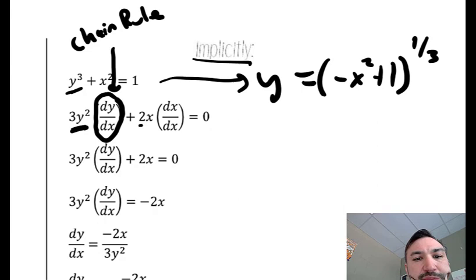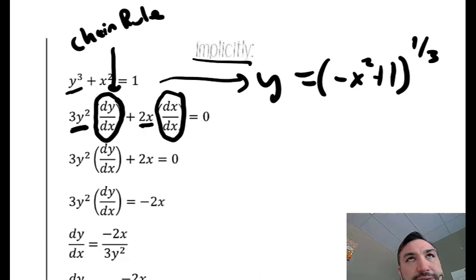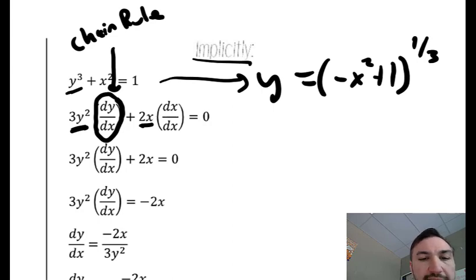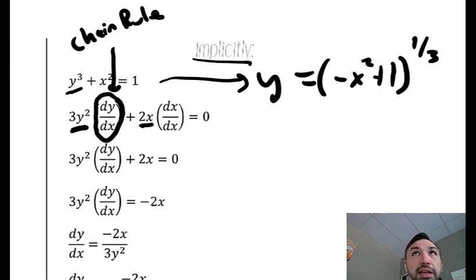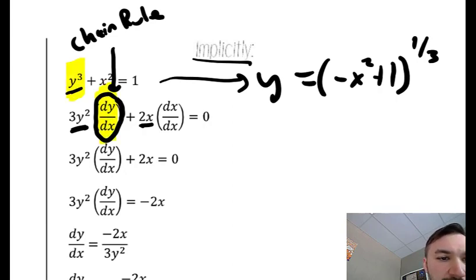Then I can take the derivative of x squared, which would be 2x. Technically, even when you take the derivative of x squared to get 2x, you're taking the derivative of x with respect to x. It's just that dx/dx is like multiplying by 1, and multiplying by 1 doesn't do anything. That's why we haven't had to keep up with that in the past — x has been our variable, and we've been taking the derivative with respect to it. But when you take the derivative of y with respect to x, you have to have that dy/dx.